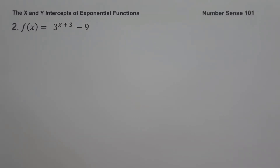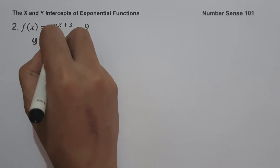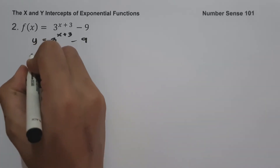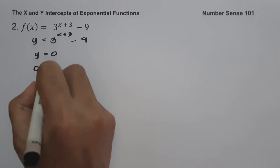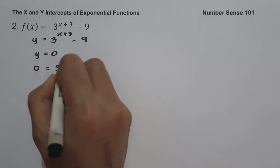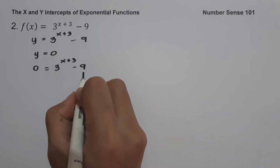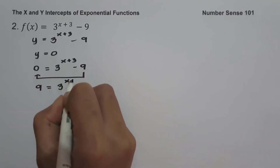On example number 2, f(x) equals 3 raised to x plus 3 minus 9. We change f(x) into y: y equals 3 raised to x plus 3 minus 9. To find the x-intercept, let us set y equal to 0: 0 equals 3 raised to x plus 3 minus 9. To solve for x, we move negative 9 to the side of 0, giving us 9 equals 3 raised to x plus 3.